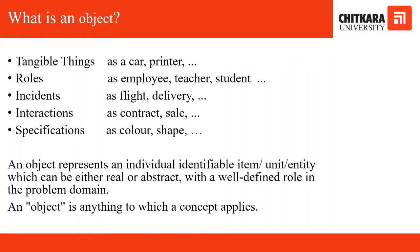What is an object? An object can be regarded as a tangible thing in the real world, such as a car or a printer. An object can also be mapped as roles such as employee, teacher, or student; incidents such as flights or deliveries; interactions such as a contract or a sale; and specifications such as color or shape. An object represents an individual, identifiable item, unit, or entity — either real or abstract — with a well-defined role in the problem domain. An object is anything to which a concept applies.